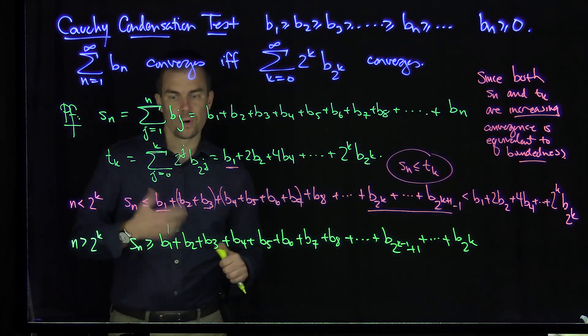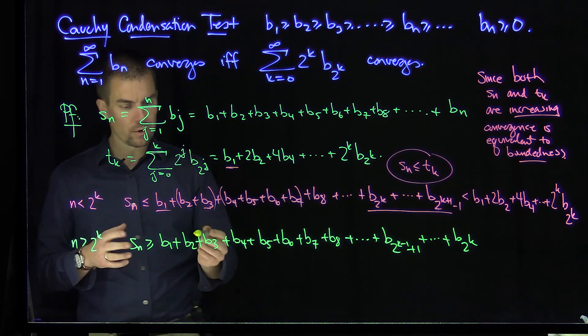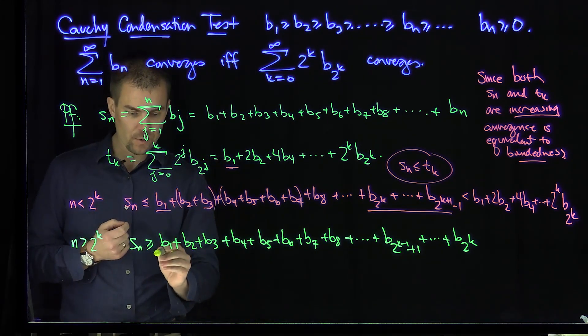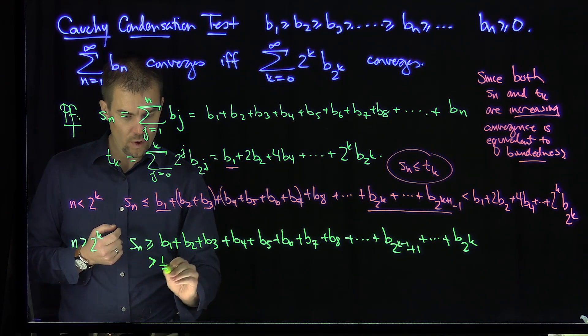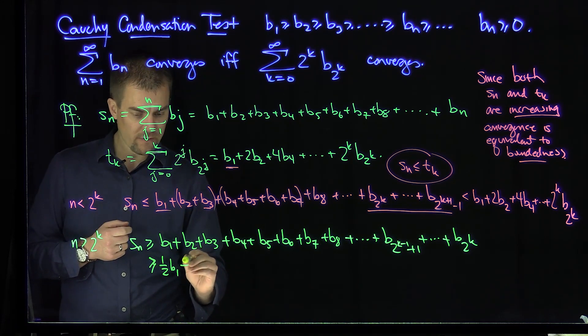Now over here, I'll say this is clearly bigger than what? We want to group these things in terms of 2s. So what I'd like to do is estimate this by one half Tk. So I'm going to say this is bigger than or equal to one half B1, and then I'll have a B2.